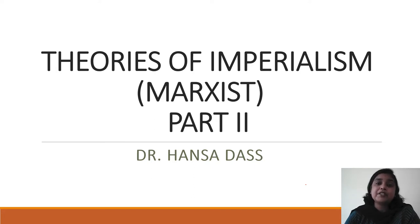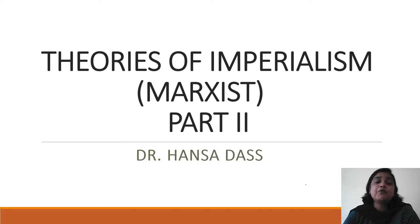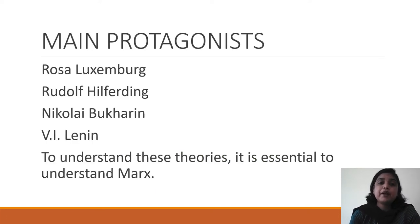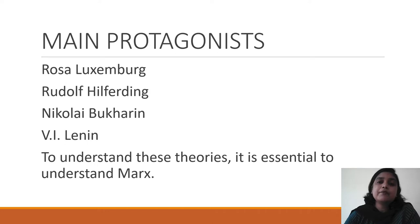We saw that Hobson was an under-consumptionist and how he linked capitalism with imperialism, and how Schumpeter said there was no link between capitalism and imperialism. In a similar manner, today we are going to deal with the different historians who have dealt with classical Marxist theories. The main protagonists are Rosa Luxembourg, Rudolf Hilferding, Nikolai Bukharin, and V.I. Lenin.